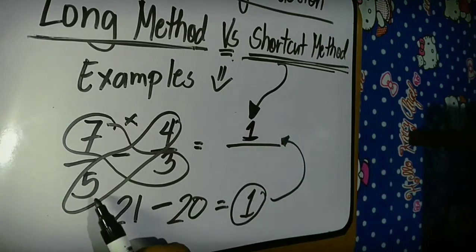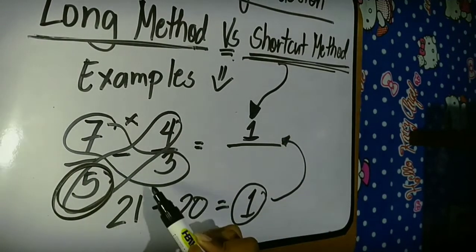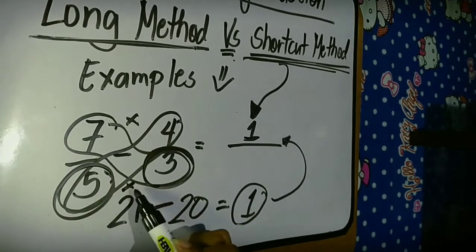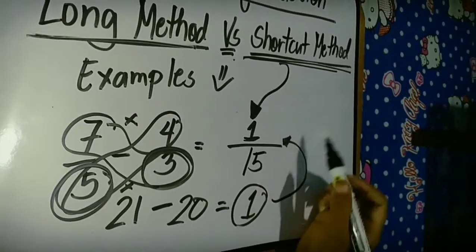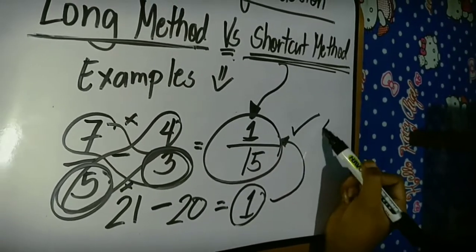And for the denominator, we will just multiply 5 times 3. 5 times 3, the answer is 15. So, as you notice, we have the same answers as the long method.